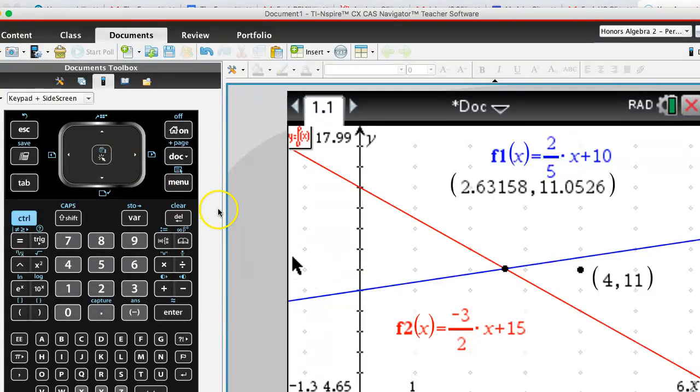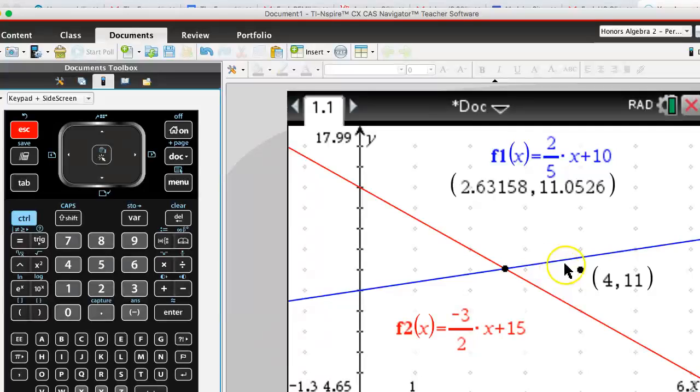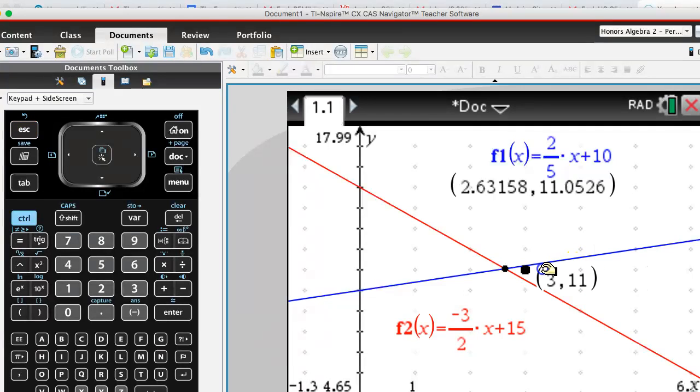That's not the closest integer point, so let me grab this. First let me escape. All right, see if I can move it closer. Right there, the point 3, 11. That would be the closest integer point. Doesn't look like there's any more.